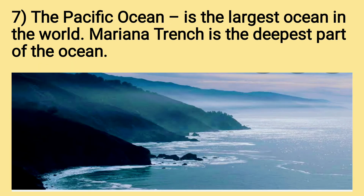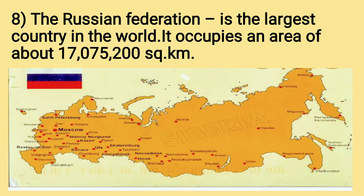This is the picture of the Pacific Ocean. It is the largest ocean in the world. Mariana Trench is the deepest part of the ocean. The next, the Russian Federation — the Russian Federation is the largest country in the world. It occupies an area of about 17,075,200 square kilometers.